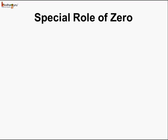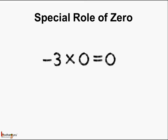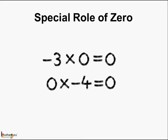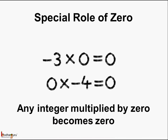Now let's see the special role of 0 in multiplication. Minus 3 multiplied by 0 is equal to 0. Same way, 0 multiplied by minus 4 is 0. Any integer multiplied by 0 becomes 0, which means the product is 0.